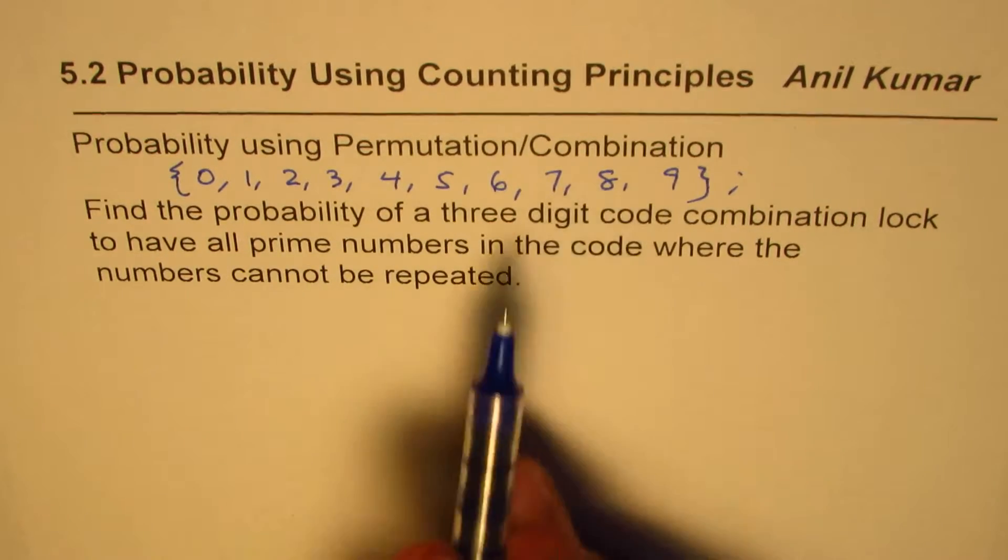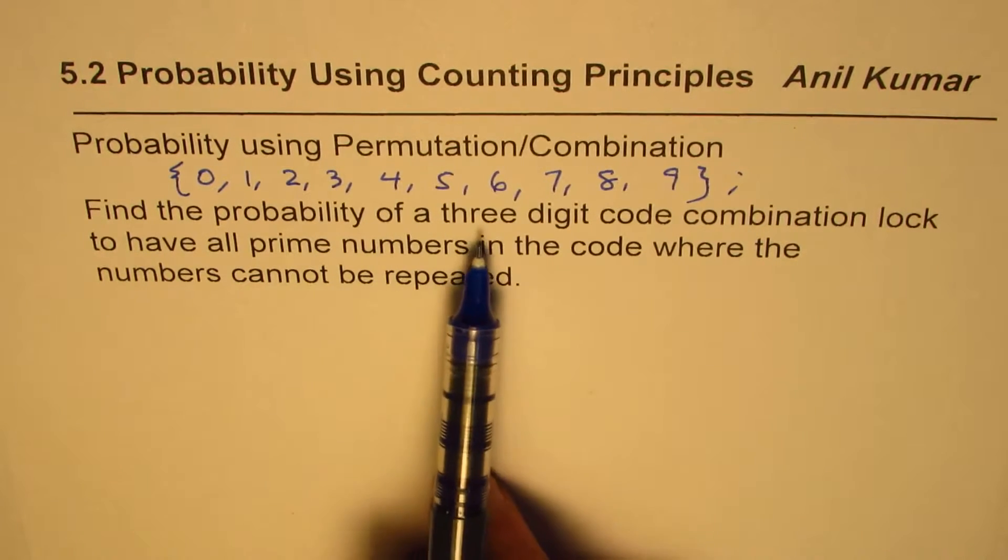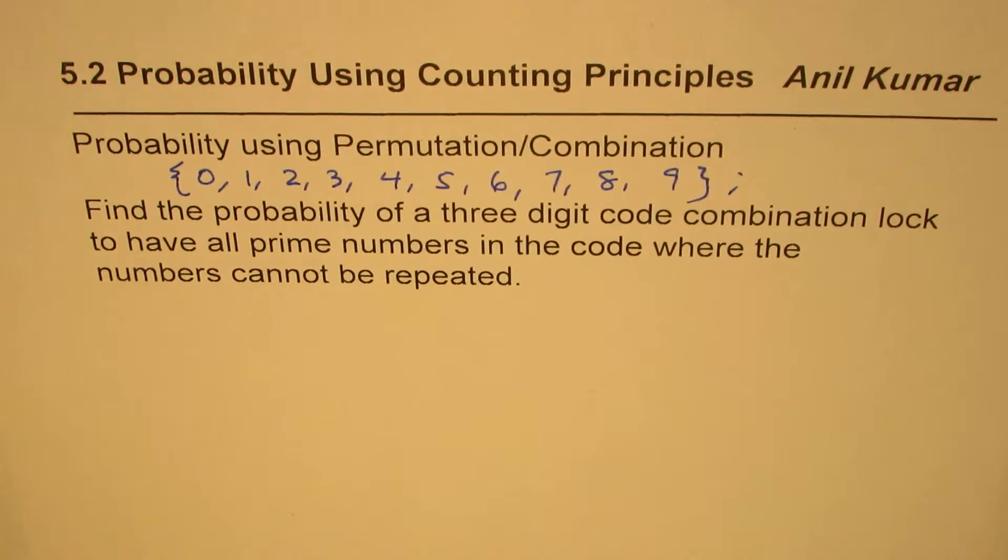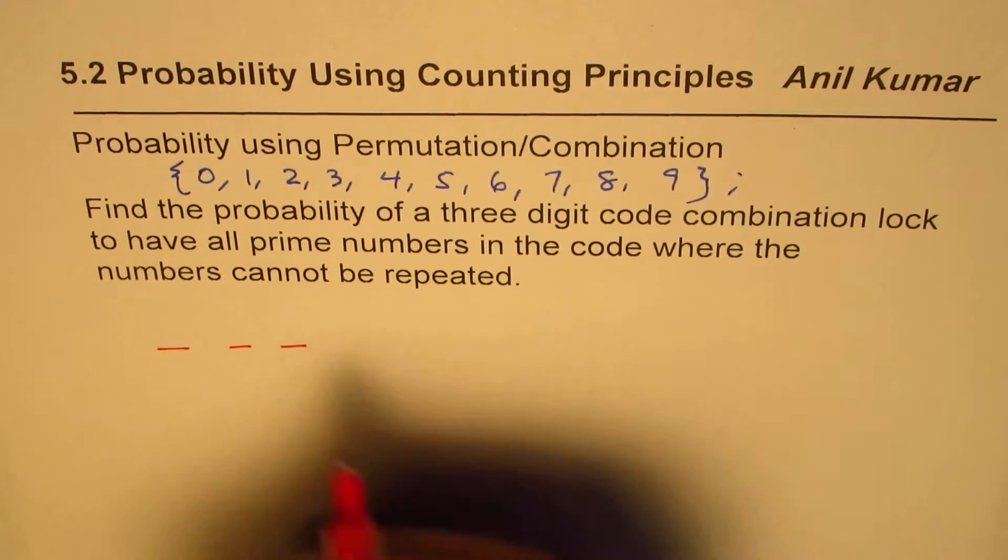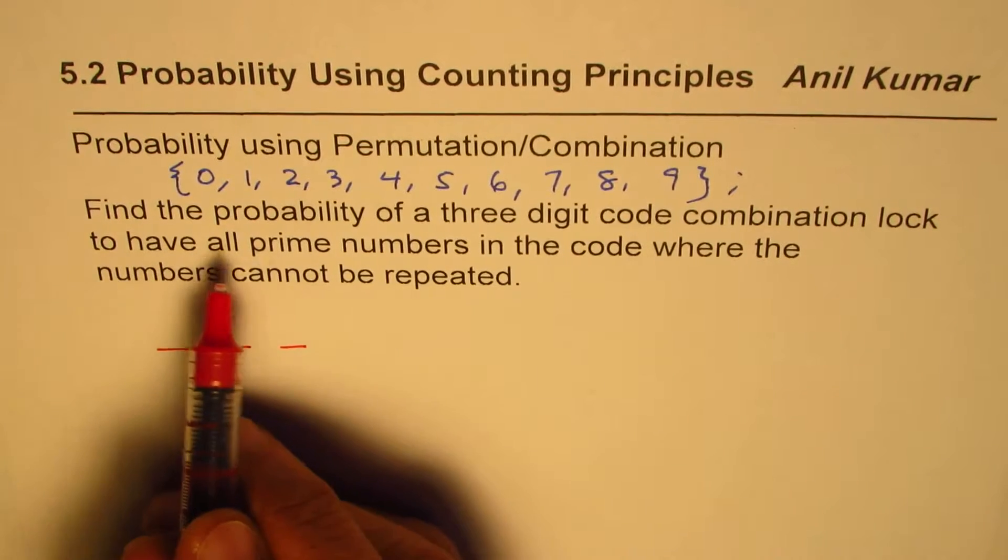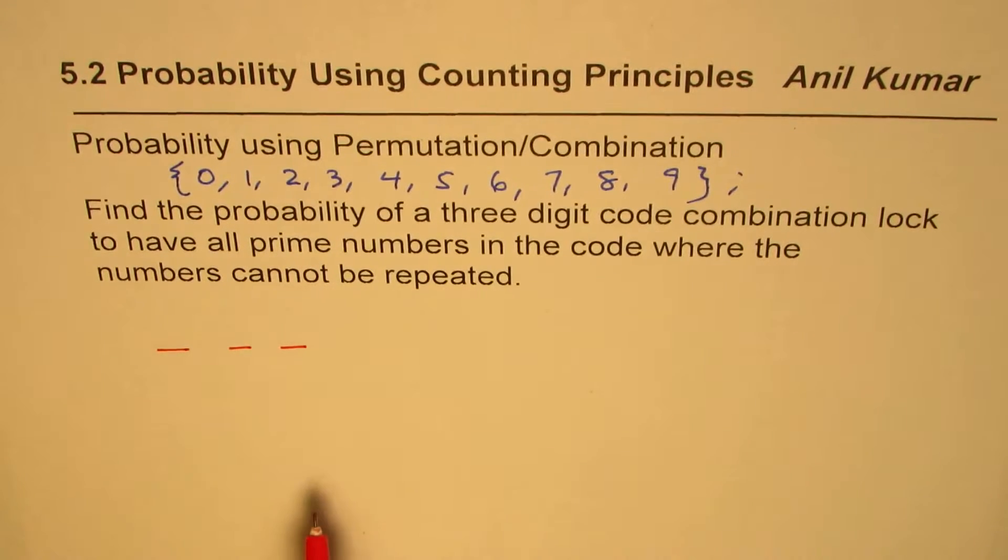So we have to select one of these. Find the probability of three digit code. That means we're trying to make a code of three digits. That is 1, 2 and 3 of a combination lock to have all prime numbers in the code.